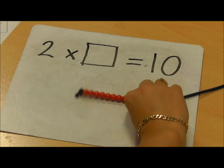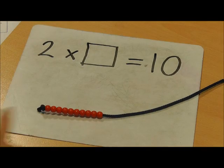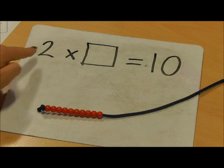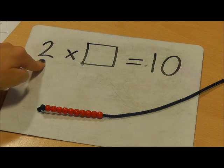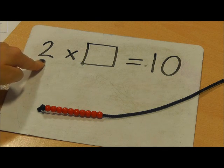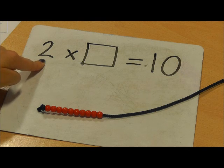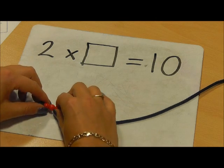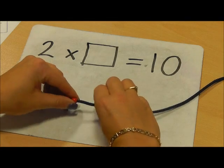Therefore with my bead string I have my 10 beads. I now need to know how many twos there are to give me my answer. So I'm going to move the beads into twos.